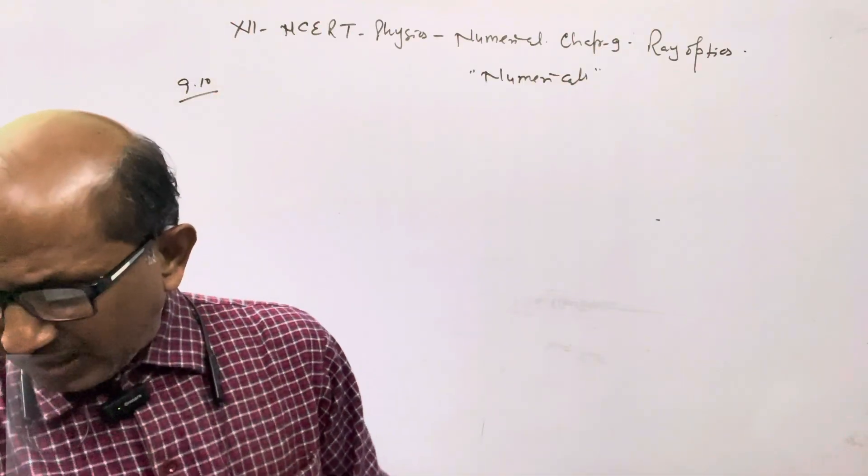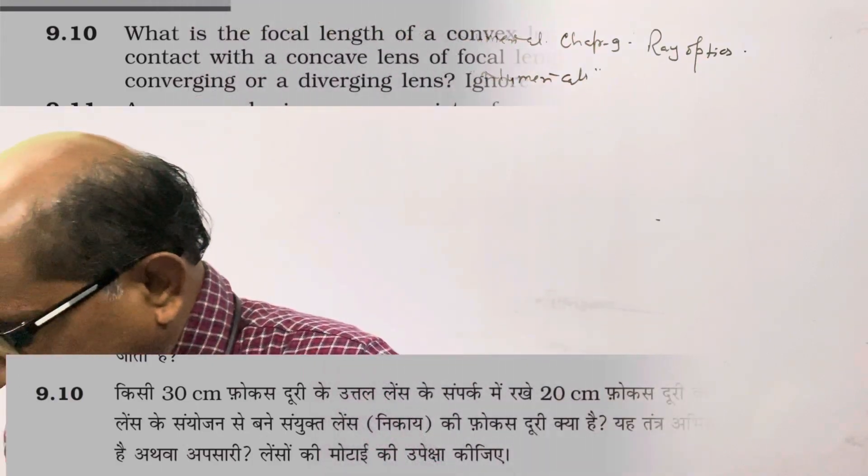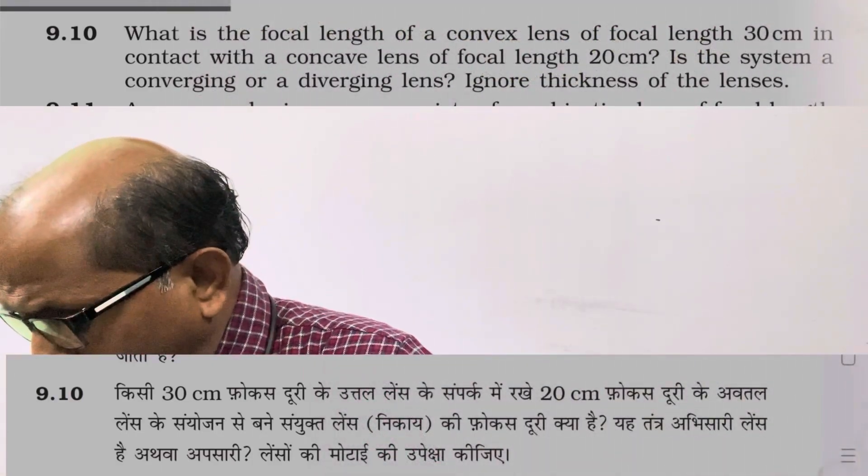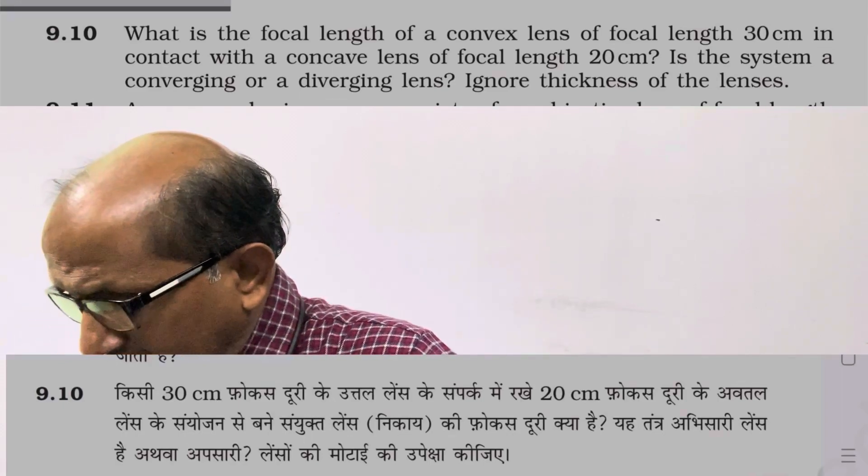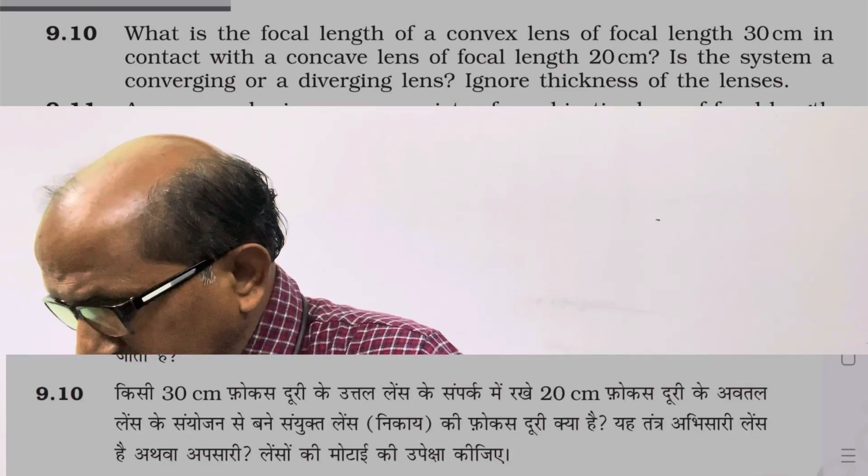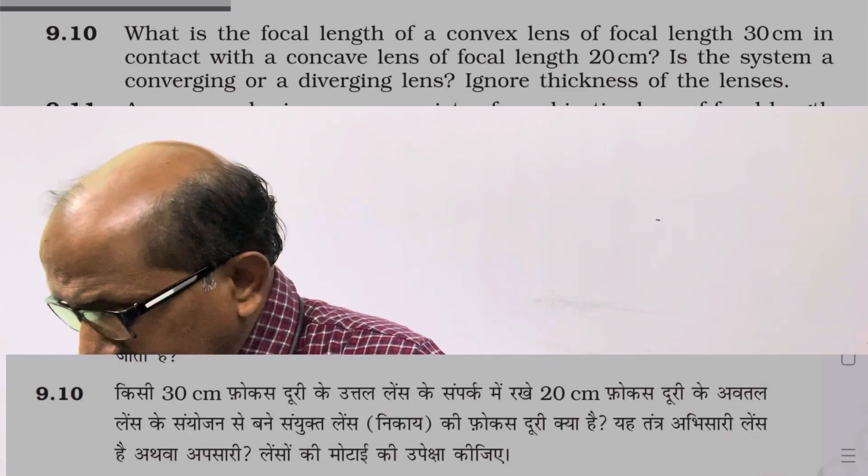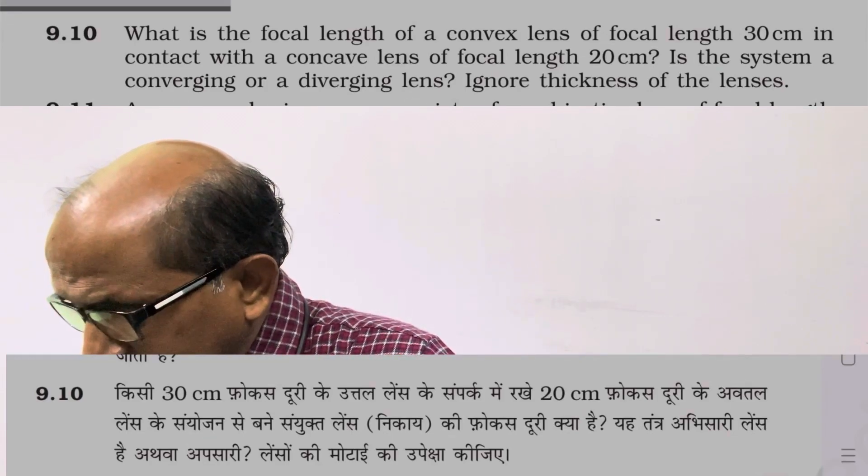Question 9.10: What is the focal length of a combination of a convex lens of focal length 30 cm and a concave lens of focal length 20 cm? Is the system converging or diverging? Ignore the thickness of the lenses.